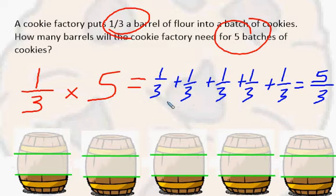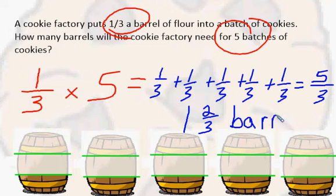Five thirds barrel of flour. We can also reduce that because for every three parts that we have in our numerator, that's one whole. So we have one whole and we have two thirds of a barrel left. So one and two thirds barrels of flour is going to be our answer.